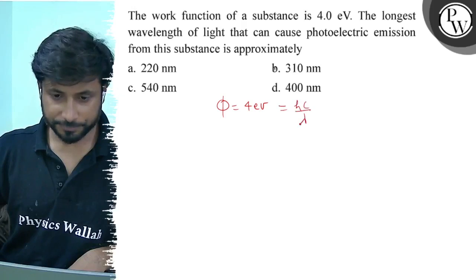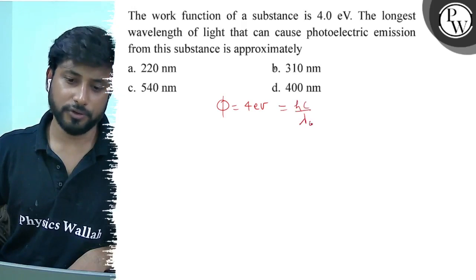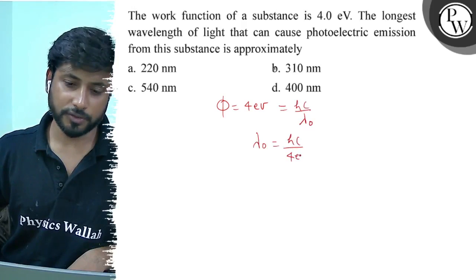For work function, we can take lambda as the threshold wavelength. Lambda naught comes from hc upon 4 electron volt.